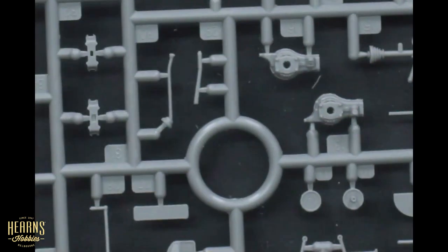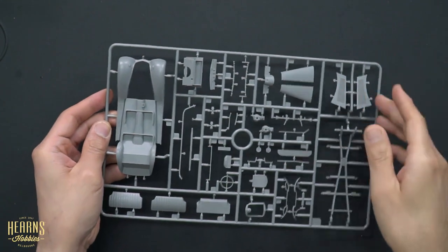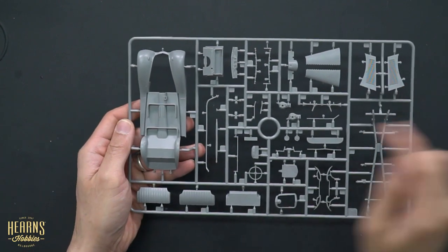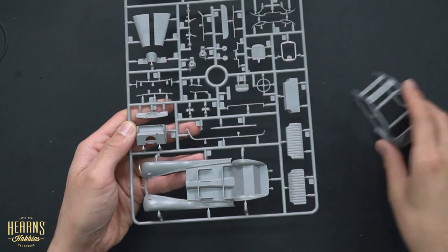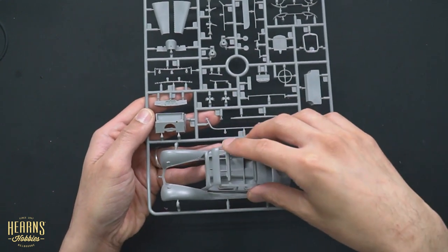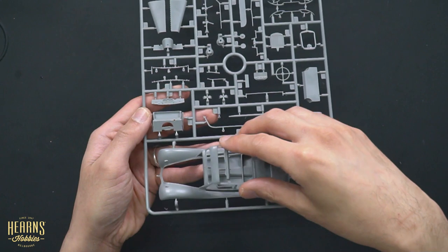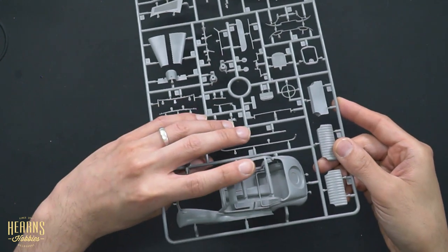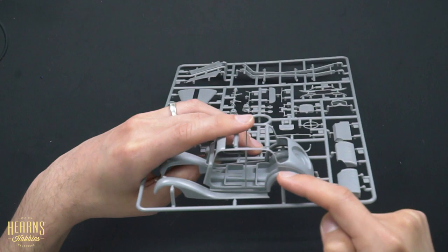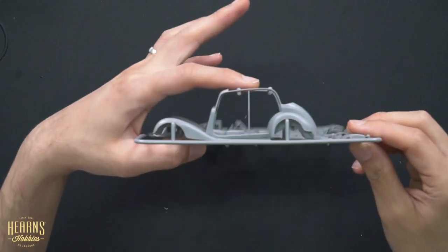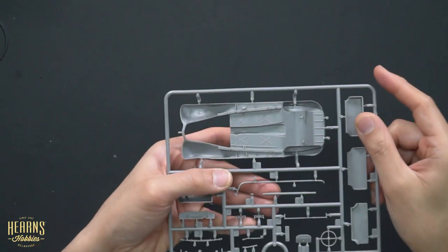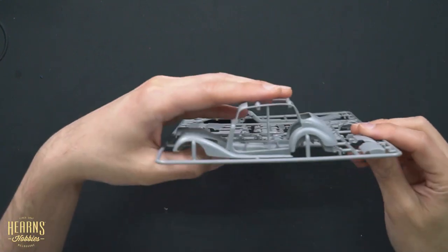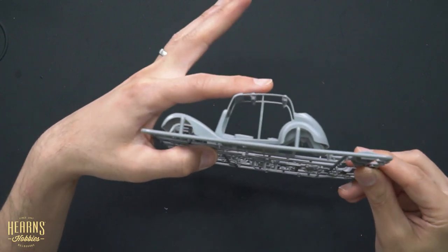From there we move onto this quite large sprue. We've got the main chassis. Let's see how this just sits over the top. Can't actually get it to fit properly because we've got these gates in the way, but you can see how it goes together already. A lot of fine detail underneath the chassis as well. It's a really nice look.